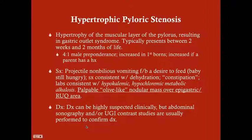Hypertrophic pyloric stenosis is hypertrophy of the muscular layer of the pylorus, resulting in gastric outlet obstruction. The pylorus hypertrophies, leaving no room for food to pass from the stomach into the duodenum. This typically presents between two weeks and two months of life, with a 4-to-1 male preponderance, increased incidence in firstborn babies, and a genetic component.